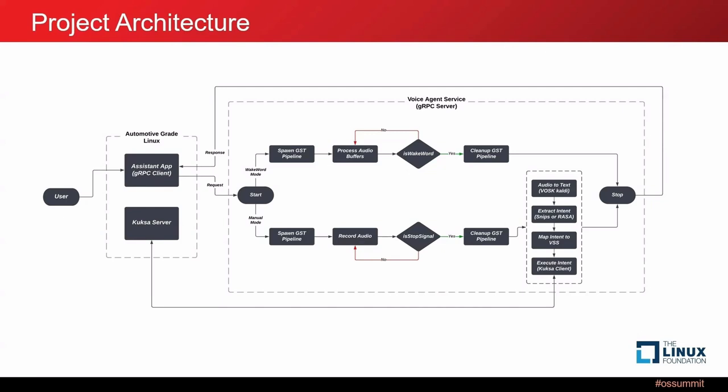We extract the intent using one of two available intent engines: Snips or Rasa — the choice depends on the request made by the client. When we have the extracted intent in a structured format, we map it to the VSS signal, and then use the Kuksa client to execute this intent. The Kuksa client communicates with the Kuksa server to perform the relevant operation. That was the main project architecture.